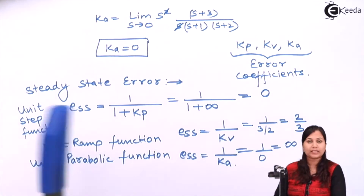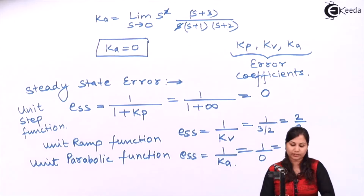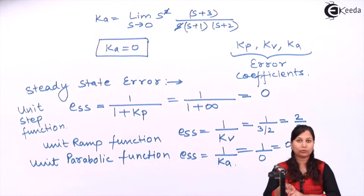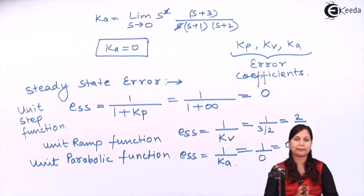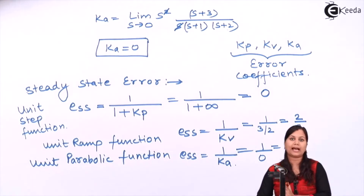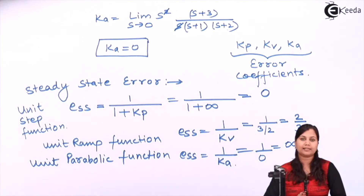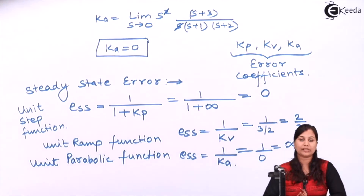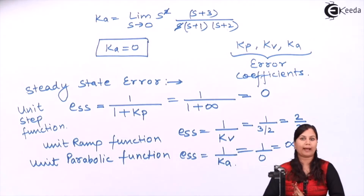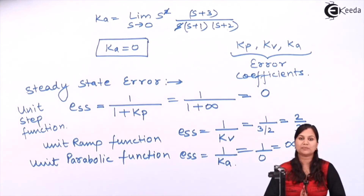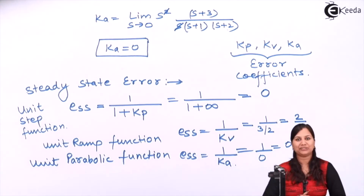So in this problem we have found out the error coefficients Kp, Kv, and Ka, and then obtained the steady state error for three inputs: unit step, unit ramp, and unit parabolic. I hope this problem is clear to you. Thank you.